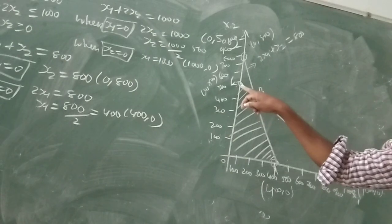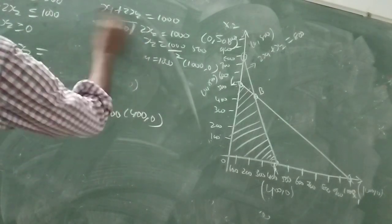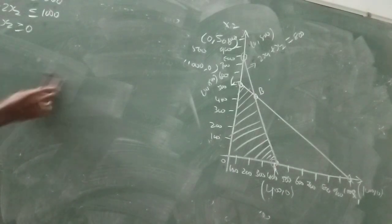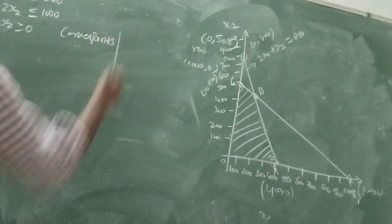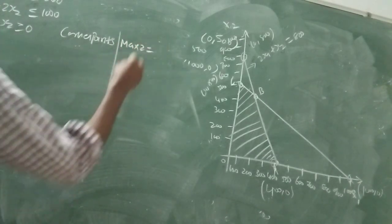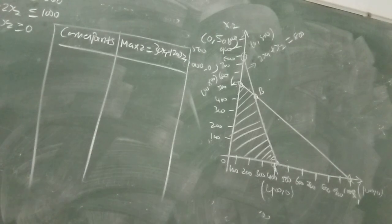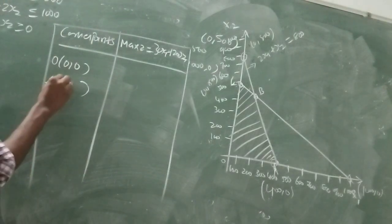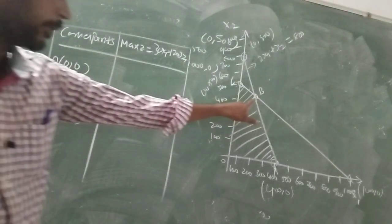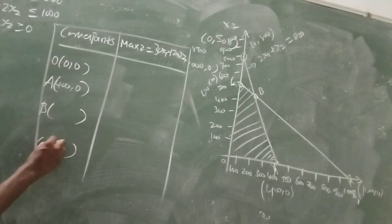There are four corner points: O, A, B, C. The first corner point is O (0, 0), and the second corner point A is (400, 0). B is the intersection point — we don't know it yet, so leave B for now. And next, C is (0, 500). We need to find maximize Z equal to 30x1 plus 20x2.